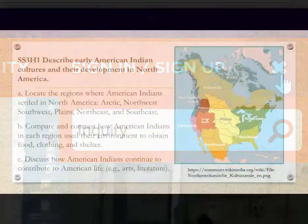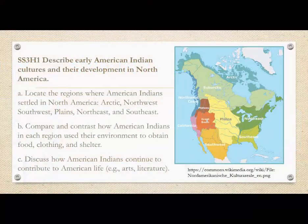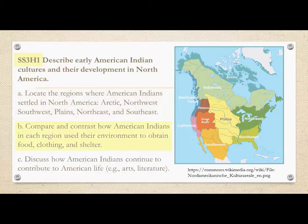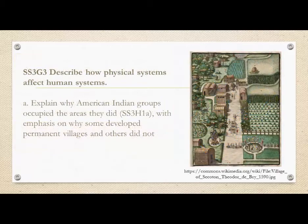The inquiry-based activities discussed in this video will address the history and geography standards focused on American Indians. This includes SS3H1, which expects students to locate six regions where American Indians settled, and compare and contrast how people in each region obtained food, clothing, and shelter. The related geography standard, SS3G3, Element A, focuses on why American Indians occupied the areas they did and the impact this had on the types of villages that developed.